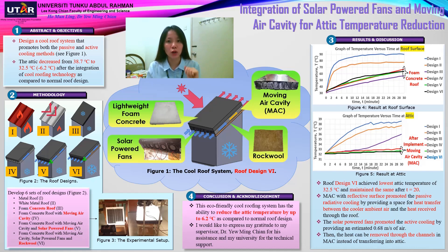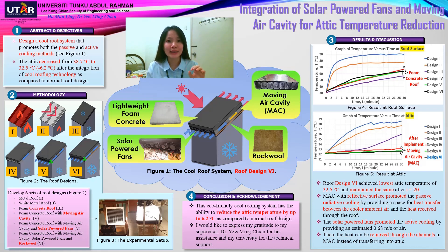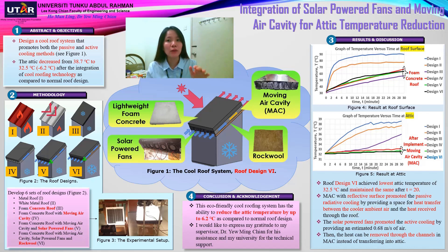Roof design 1 is the control experiment, the metal roof. Roof design 2 is the metal roof with white reflective coating, or white metal roof, where in some existing co-roof designs the roof was coated with this reflective material to reflect the heat away. This roof design is used to compare the current co-roof design with my co-roof system.